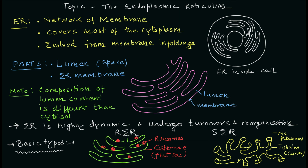In summary, the endoplasmic reticulum is a network of membranes that covers most of the cytoplasm. It is possibly evolved from membrane infoldings. It has a lumen and an ER membrane, and the composition of the lumen content is significantly different from the cytosol.